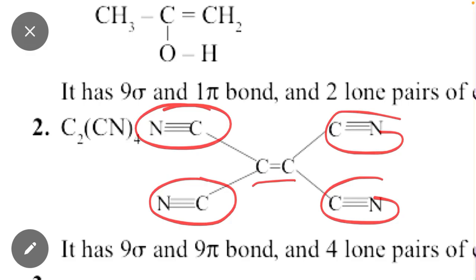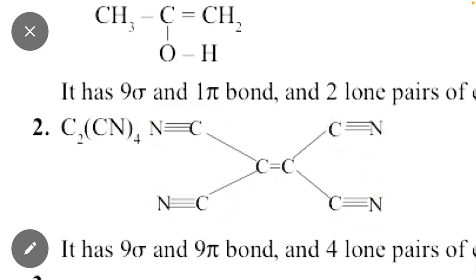Here the number of sigma bonds are 9 and pi bonds 1, 2, 3, 4, 5, 6, 7, 8 and 9 sigma bonds.